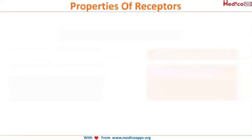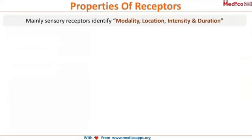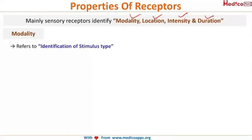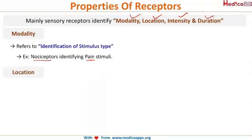The properties of receptors are mainly modality, location, intensity, and duration. Modality refers to what type of stimulus a receptor responds to. For example, pain is the type of stimulus which is perceived by the nociceptors.